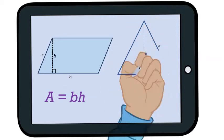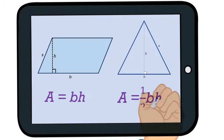The area of a triangle is one half times its base times its height.